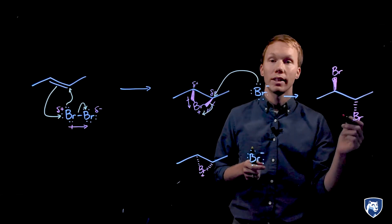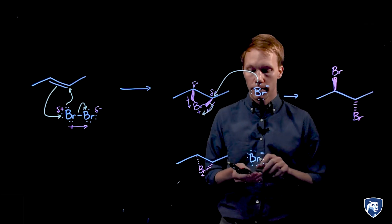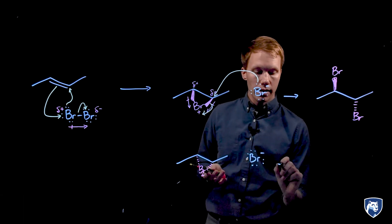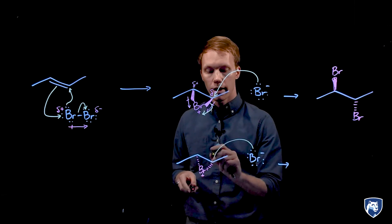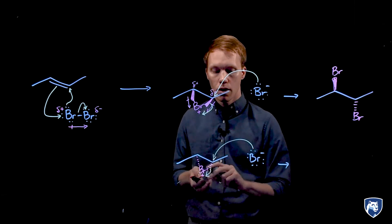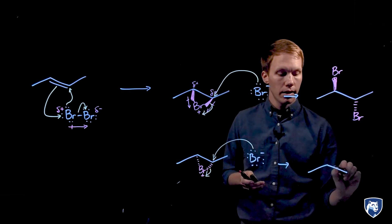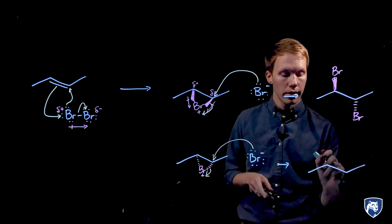This gives us the anti-relationship between those two groups. Likewise, if the same thing happens with our enantiomer, we will get the other stereoisomer.